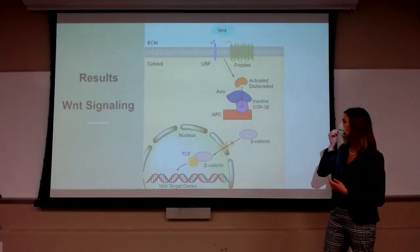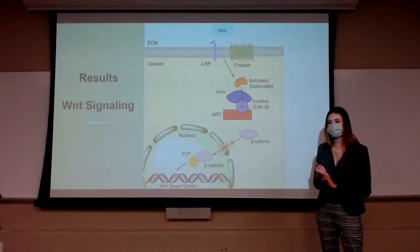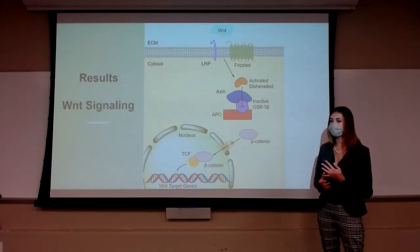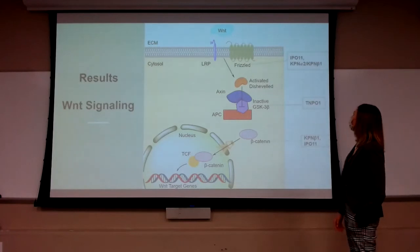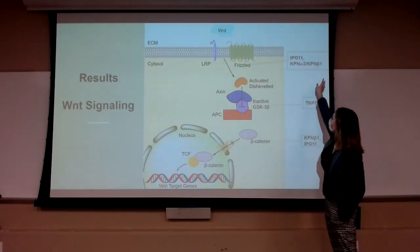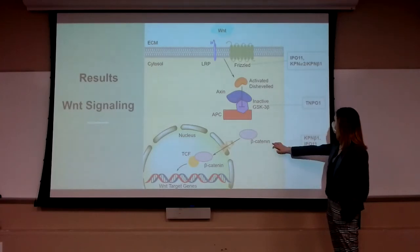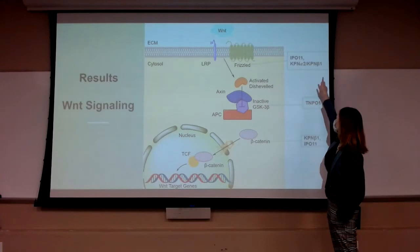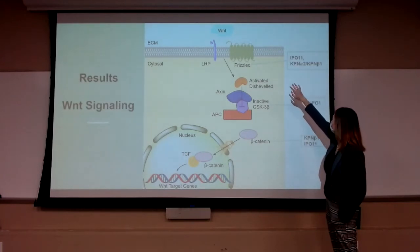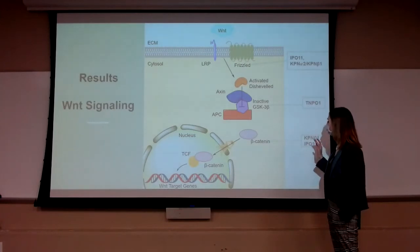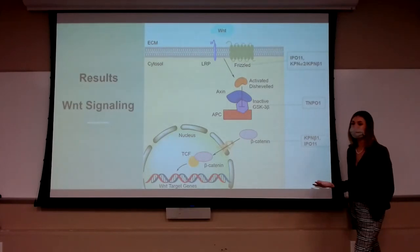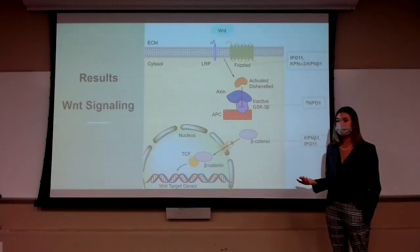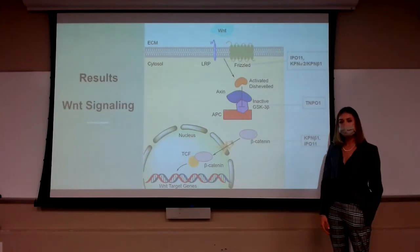As an example, we looked at Wnt signaling, which is involved in cell polarity, cell fate specification, neural patterning, and organogenesis. We found that different components were associated with importins: importin 11 carries Frizzled and beta-catenin; KPNB1 also carries beta-catenin; KPNA2/KPNB1 carries Frizzled; and glycogen synthase kinase is carried by transportin 1. Some of these are carried by multiple importins, which is actually advantageous — if one transport pathway isn't working, you don't want those transcription factors to fail to reach the nucleus, since they must be there for development to proceed.